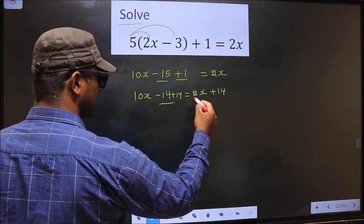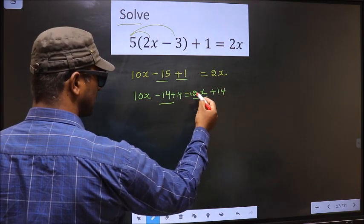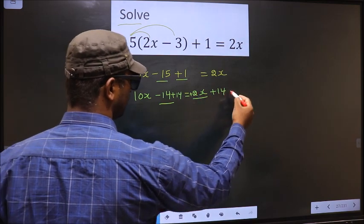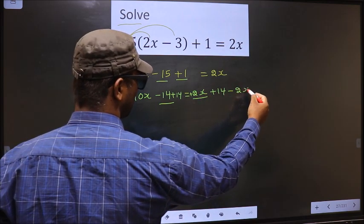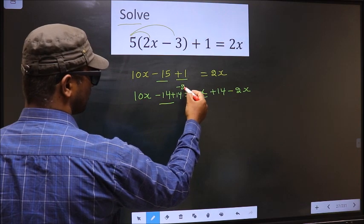In the same way, plus 2x should not be present on this side. So to remove plus 2x, you subtract 2x on both sides.